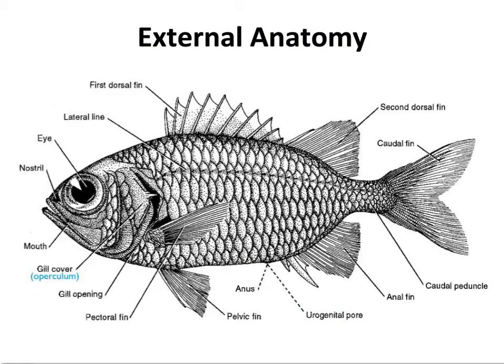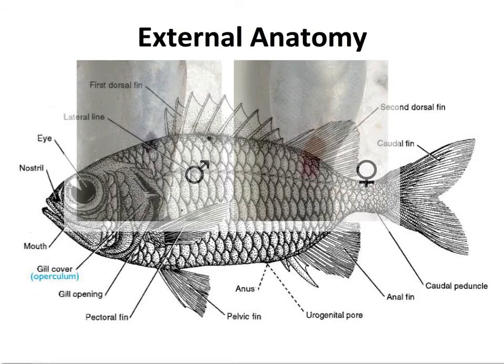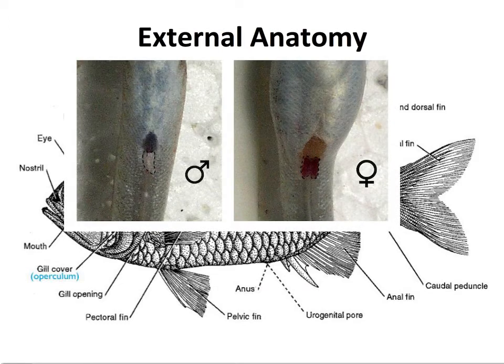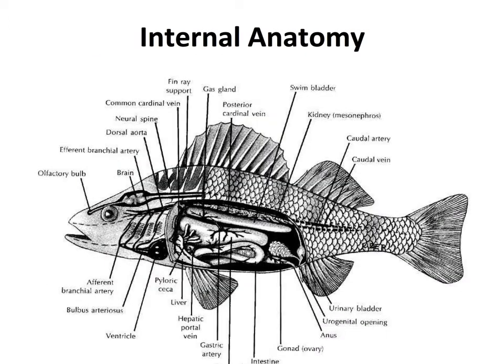Finally, the anus and urogenital pore are located just anterior to the anal fin — both waste and urine come out here. The shedding of eggs or sperm, whether from a male or female, also comes out of the urogenital pore. In some species we can actually identify sex based on the shape of the urogenital papillae, which is just a bump extending from the urogenital pore.